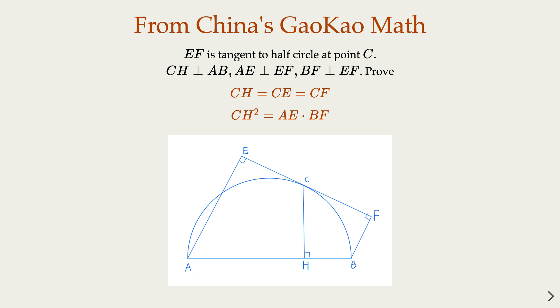This is from China's Gaokao. It's a geometry problem in college entrance exam. Now here we have a half circle, AB diameter.